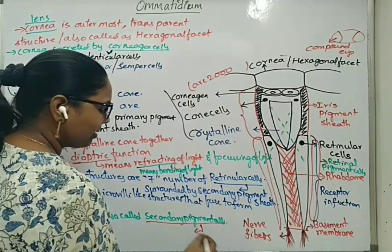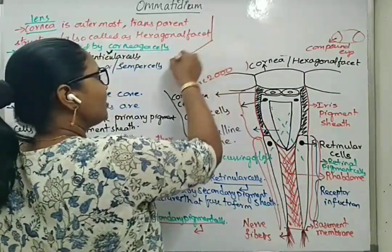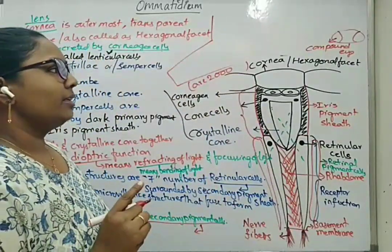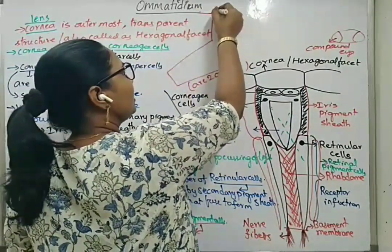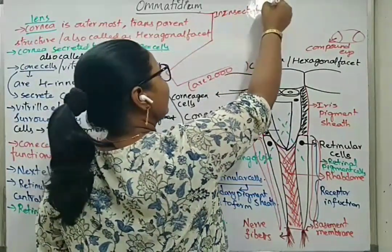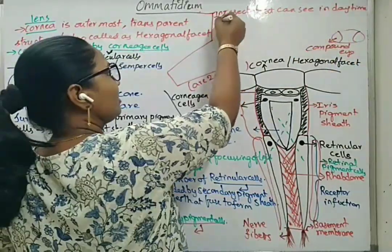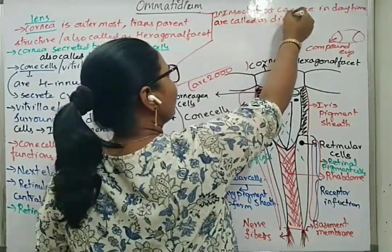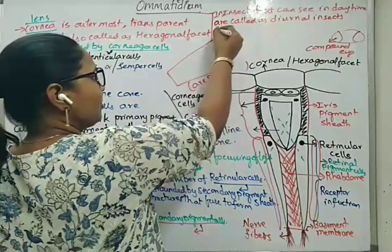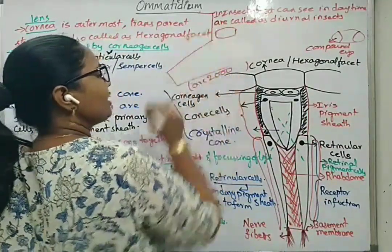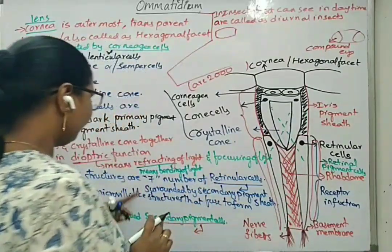These secondary pigment cells help in preventing or focusing of light from one omatidium to the other. Cockroach belongs to insects. Insects that can see during daytime are called diurnal insects. In diurnal insects, the cornea supports dioptric vision — the corneal agent cells bend light and focus it onto the rhabdom.